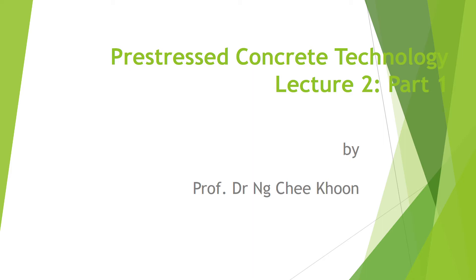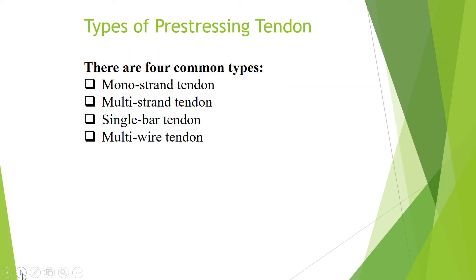Hello everyone, this is Professor Ng Chi Koon from Unimask. In this video I'm going to give you a lecture on pre-stressed concrete technology, which is lecture number two, part one. In this lecture we are going to look at the types of pre-stressing tendons. In the previous lecture we already saw the types of pre-stressing steel used — bars, wires, and strands — and all these are formed into pre-stressing tendons. A pre-stressing tendon may consist of a mono-strand tendon, a multiple-strand tendon, a single bar tendon, or a multi-wire tendon.